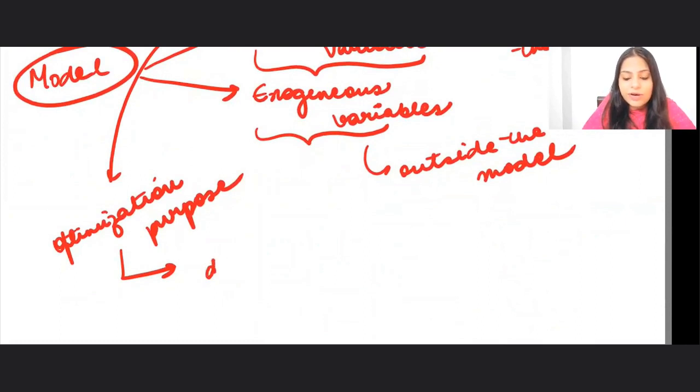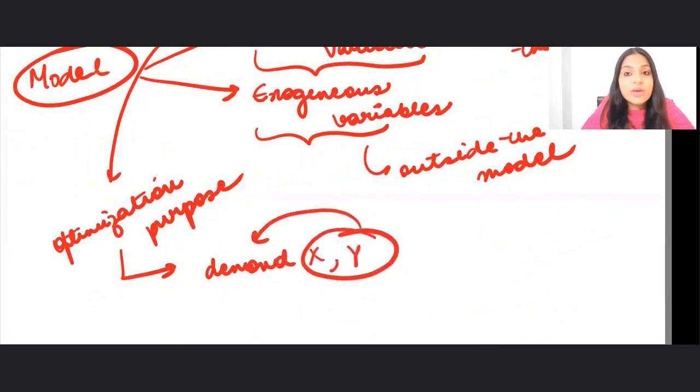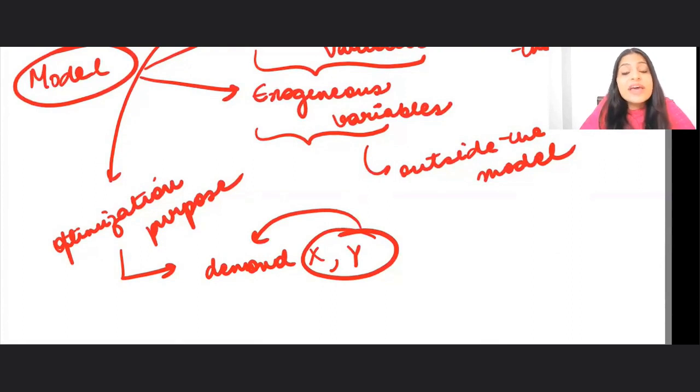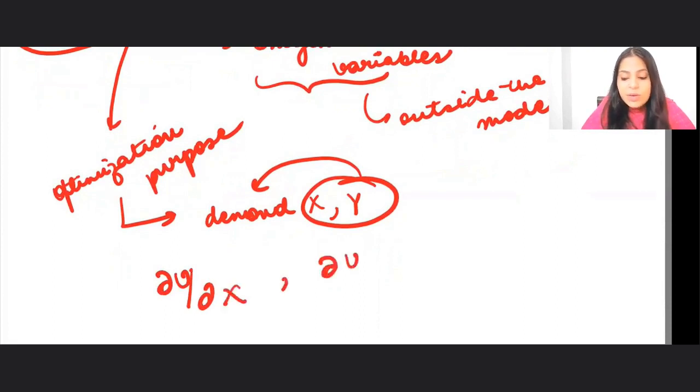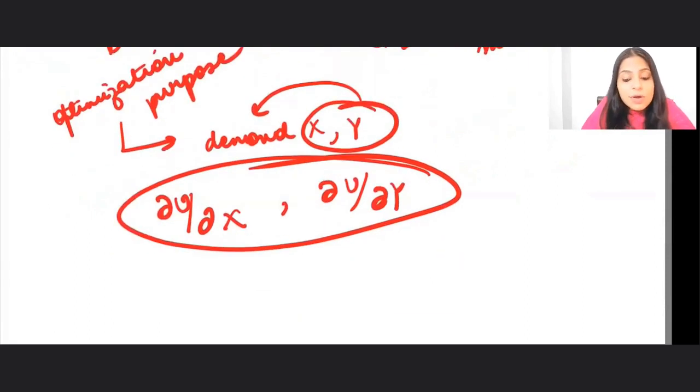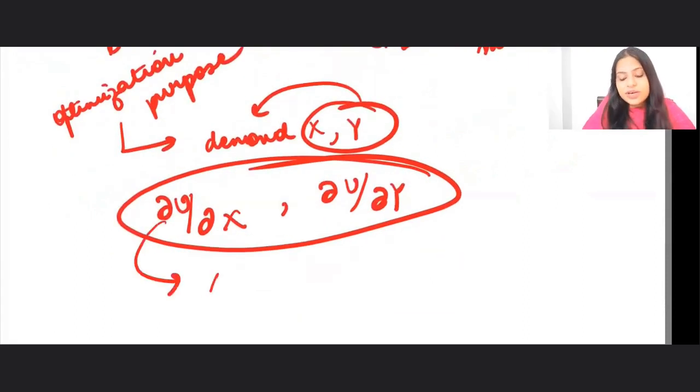I want to determine what is the optimal amount of x and y that should be demanded. Suppose I go ahead and say that, then I am saying that whenever I will maximize my utility, I will maximize my utility with respect to x and y.